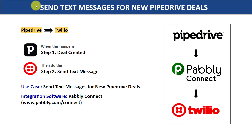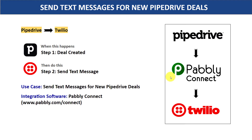Hello everyone. In this video, we will learn how to send text messages for new Pipedrive deals. Imagine you have created a new deal with a person called John in Pipedrive — you have John's name, email address, and phone number. Your idea is to send a confirmation SMS to John. The first choice is to copy all details from Pipedrive and manually send it via SMS apps like Twilio, but that is repetitive and tiresome. A better approach is to bring in some automation so that whenever a new deal is created in Pipedrive, an SMS is automatically sent via Twilio.